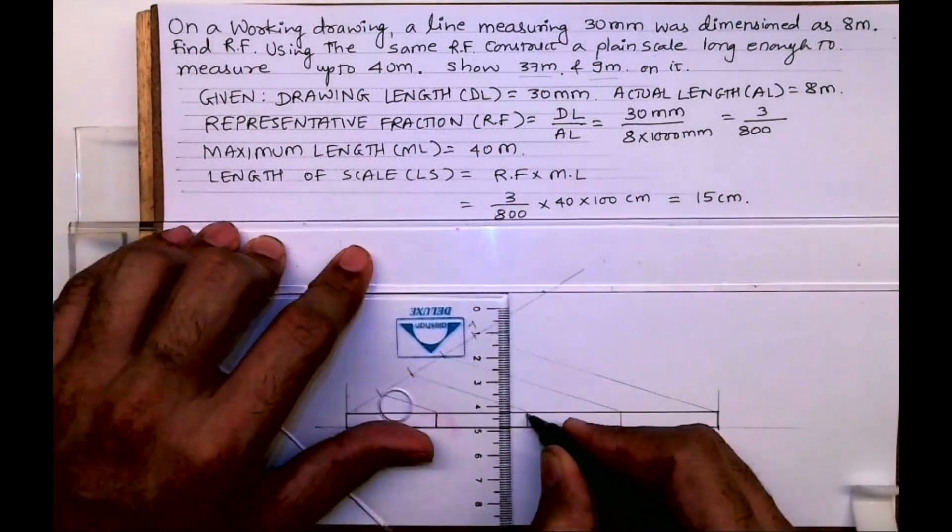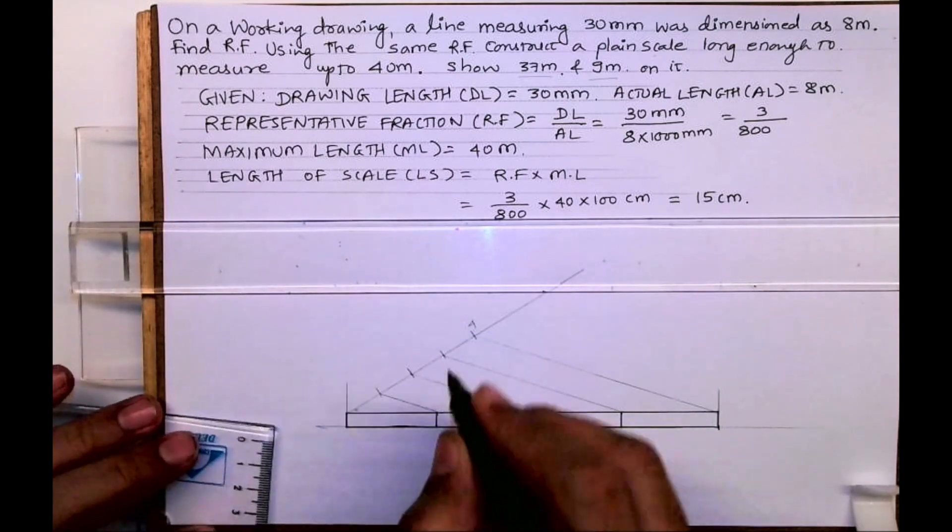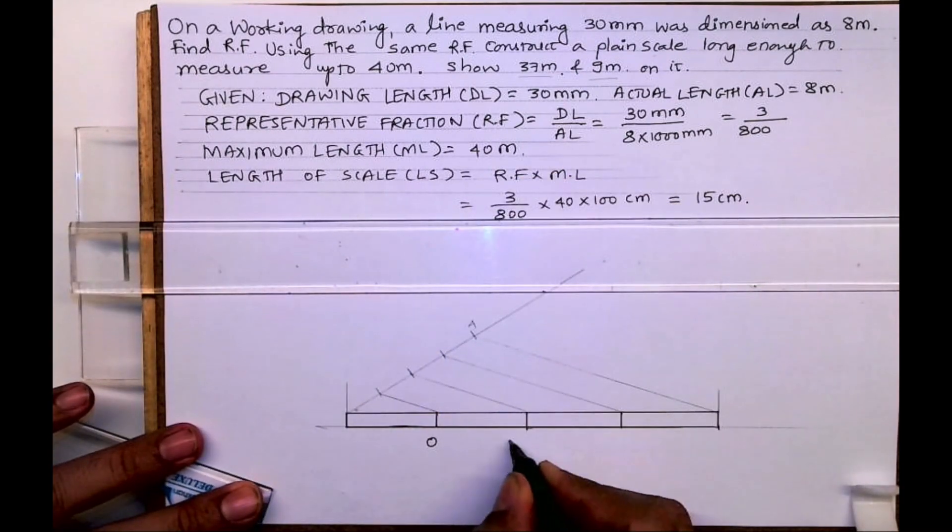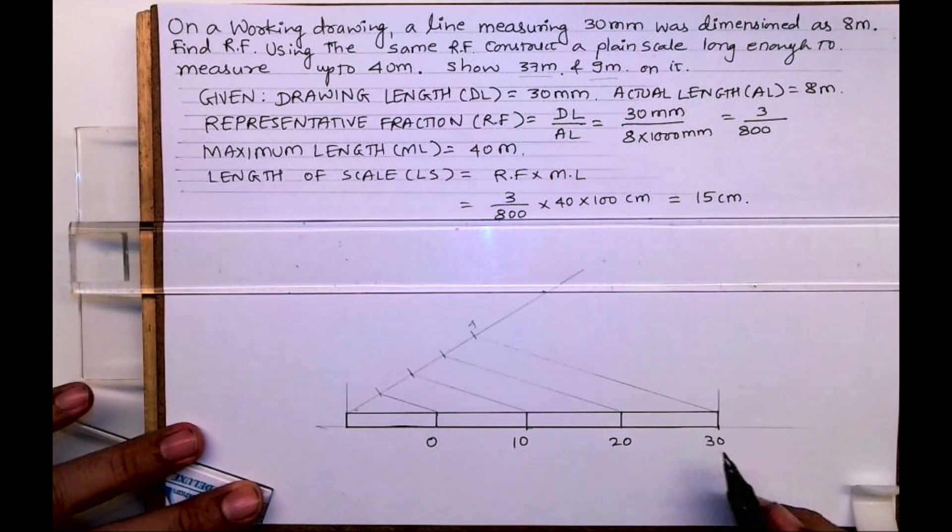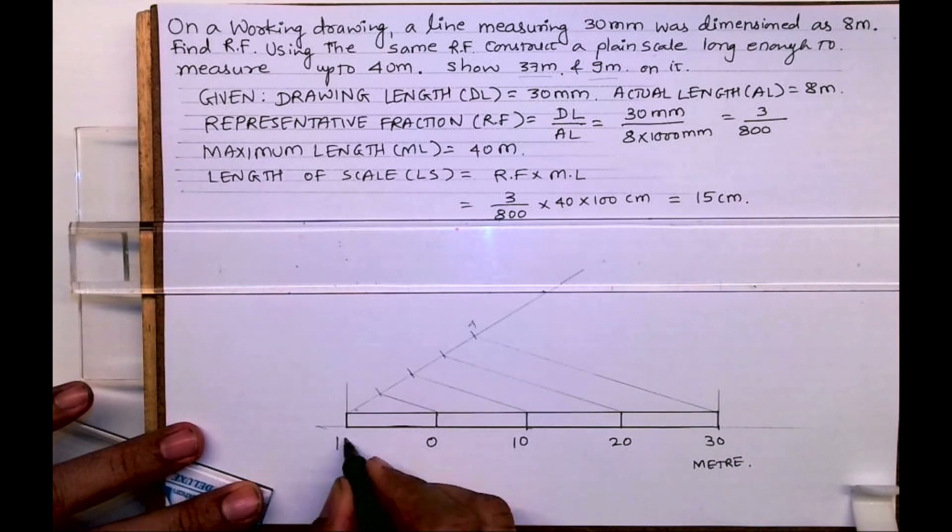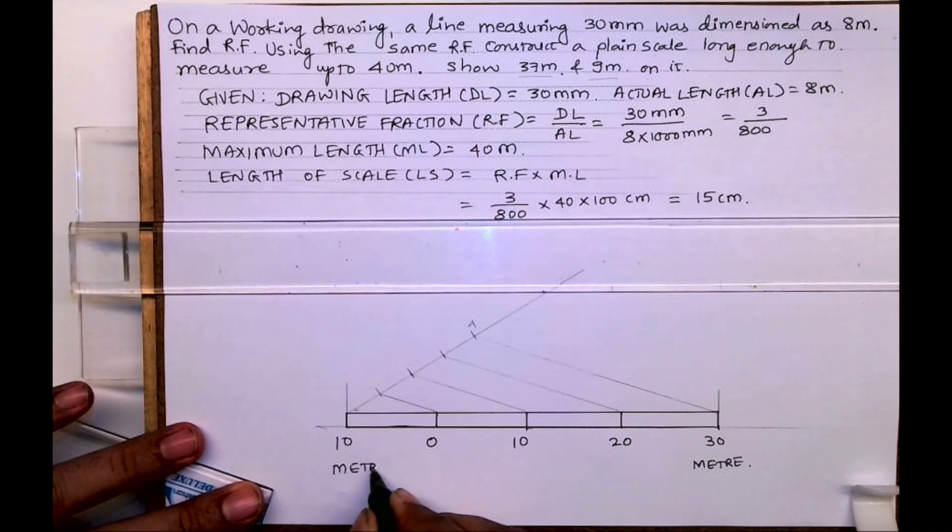So we got four parts. This is very useful in ICAC technical drawing application paper. Here we are writing 0, 10, 20, 30 meters, and here again 10 meters. So we'll divide the first block into 10 part.